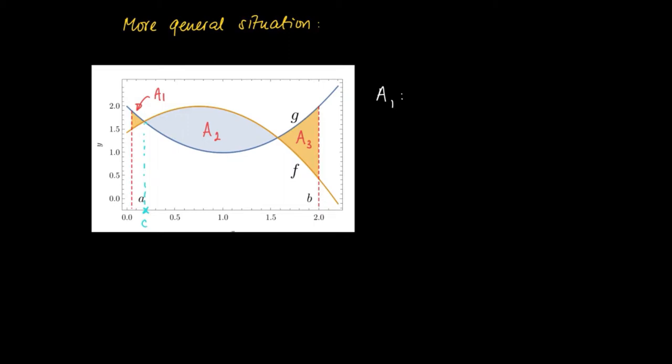then we see that A1 is given by the definite integral from a to c of g(x) minus f(x), since g gives the higher values of the two.